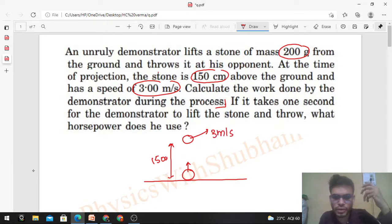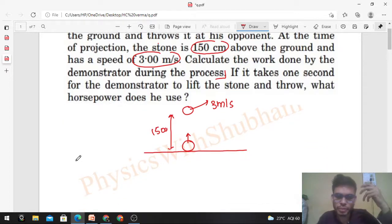We have to find the work done by the demonstrator. The demonstrator will apply some force, let's say capital F. It can be any type of force—variable or constant. You don't have to bother about the type of force. There is some force applied by the demonstrator on the stone, and this force will perform some work on the stone. That is what we have to find out.